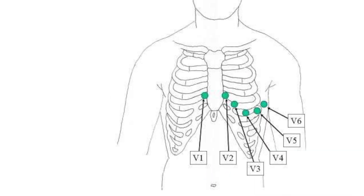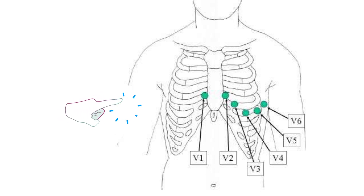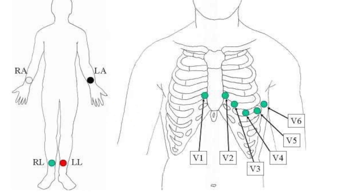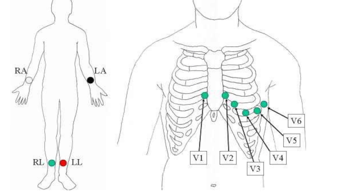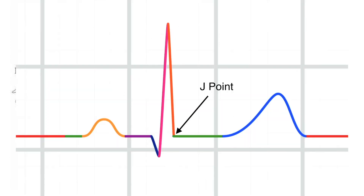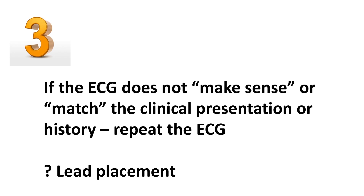The second most common issue is the right arm and leg limbs being reversed, which will cause lead two to be extremely flat. Also check the chest leads — if they are too high on the chest or incorrectly placed this will cause an abnormal picture on the ECG. There are also physiological changes to consider; for example, a slurred J point may be normal for some patients but warrants further investigation in a 60-year-old with a smoking history.